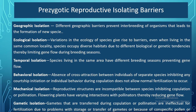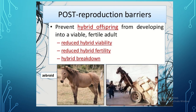Now, postzygotic reproductive barriers mean that fertilization has occurred but the offspring faces chromosomal abnormalities or developmental defects, and will eventually die. It prevents hybrid offspring from developing into viable, fertile adults. The offspring is called a hybrid because two different species have interbred. The hybrid will have reduced viability, reduced fertility, and will eventually break down.